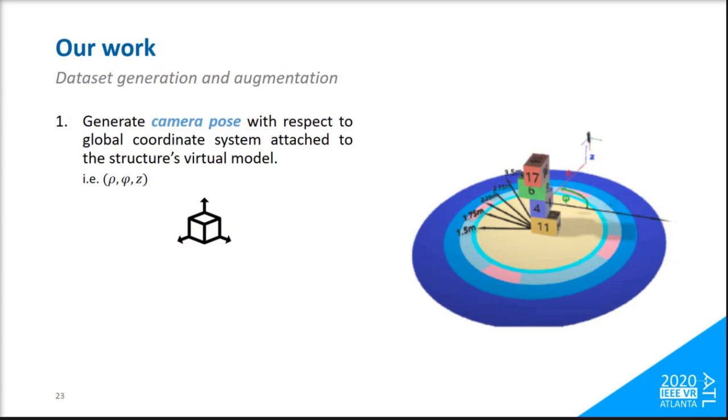The first step in our training pipeline is to generate poses of virtual cameras that will serve as viewpoints in the dataset generation. To this end, we uniformly sample the volume around the center of the structure and compute the camera orientation so that they will be pointing to the center of the structure, with some uncertainty, controlled by uniform sampling around the center.